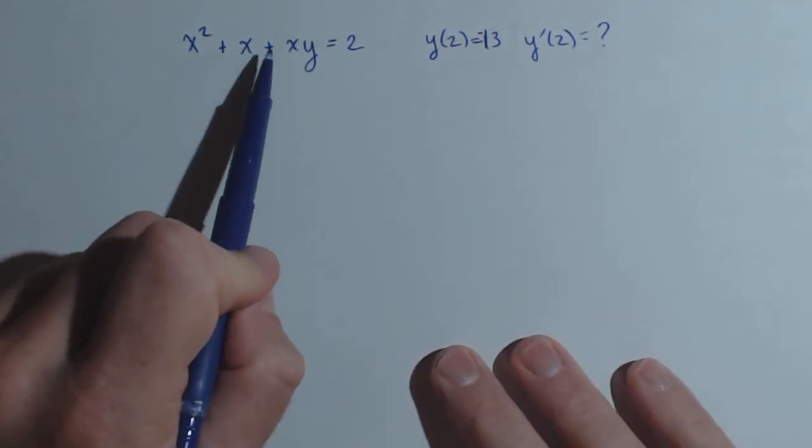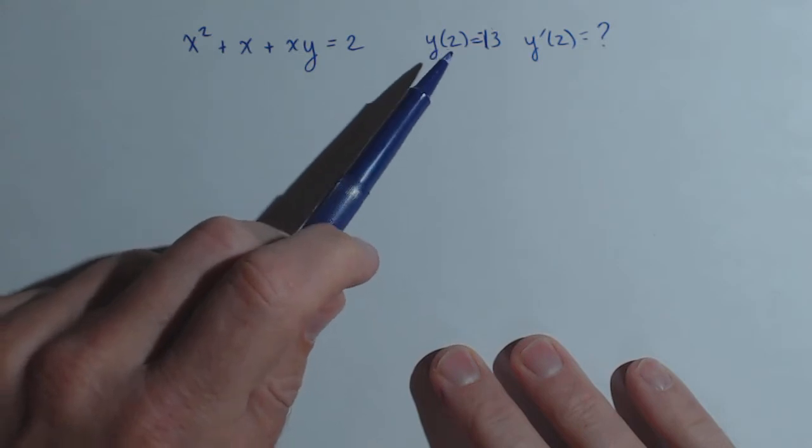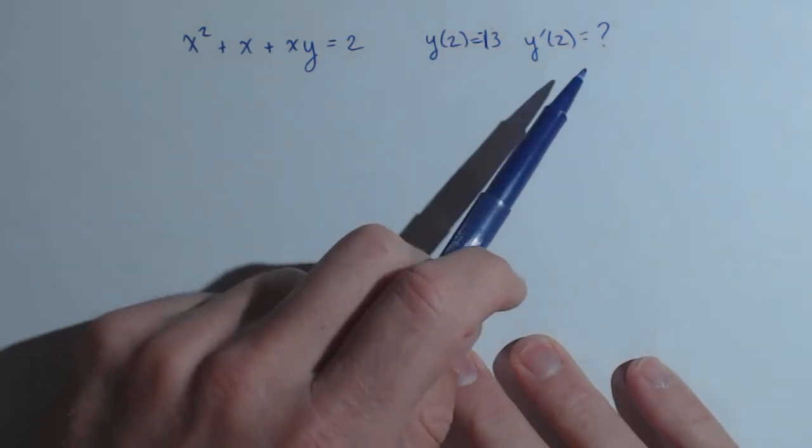We're given the equation x squared plus x plus xy equals 2, and y of 2 equals negative 13, and we're asked to find y prime of 2.